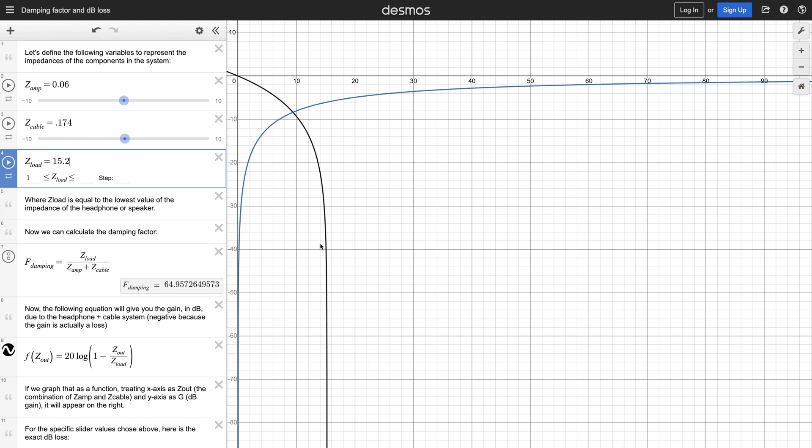To conclude, can cables make an audible difference? If you have a low impedance load, it is fairly possible for the drop in SPL from a higher resistance cable to be audible, but a higher resistance cable is needed to detect a change in frequency response.